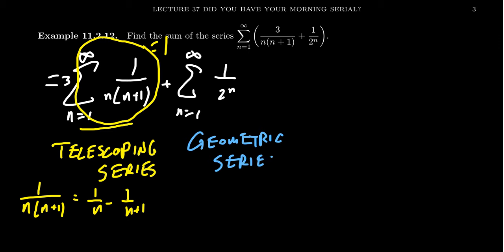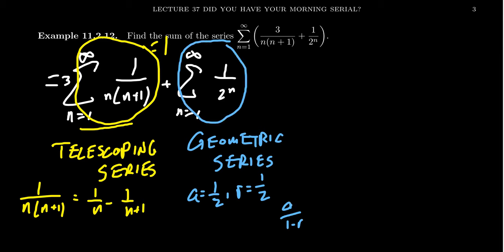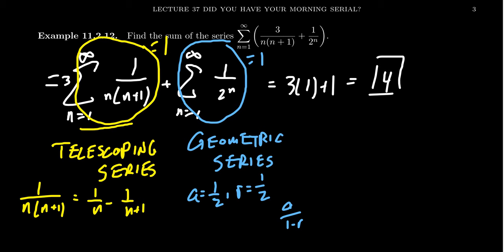It's a geometric series where your first term a equals 1/2 — you just plug in n equals 1 — and your constant ratio r is also 1/2. Using the formula a over 1 minus r, this likewise turns out to equal 1. Therefore, when you use the linearity properties with these series computed individually, you get 3 times 1 plus 1, so this series adds up to be 4.